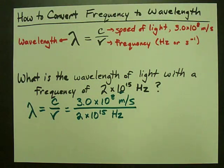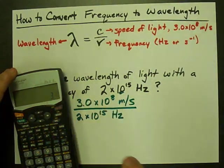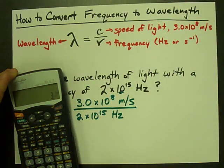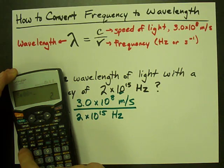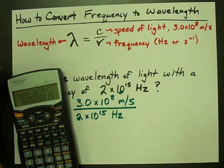So all I need to do is go to my calculator and say 3 times 10 to the power of 8 divided by 2 times 10 to the power of 15, and I get some number.